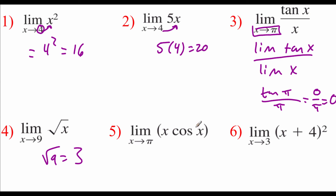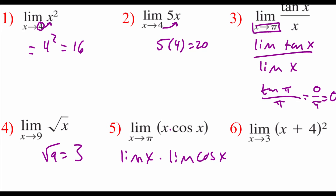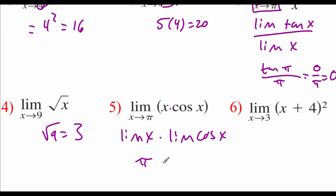For number 5, we've got a couple of things being multiplied together — x times the cosine of x. I want to evaluate each limit individually: the limit of x times the limit of cosine of x. We can replace x with π in both, so we've got π times the cosine of π. Cosine of π is negative 1, so we have π times negative 1, which gives us negative π.